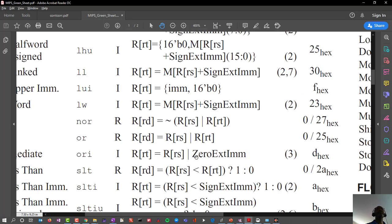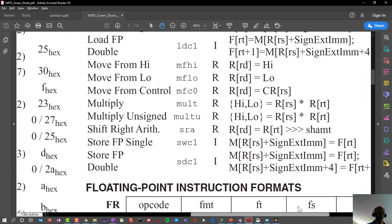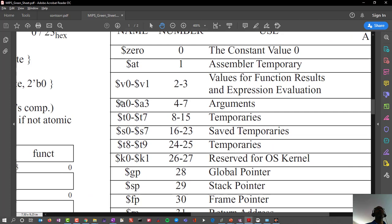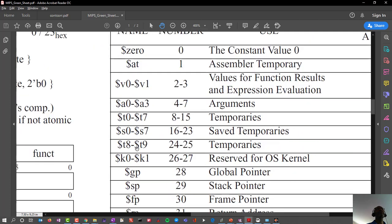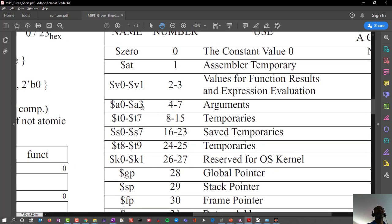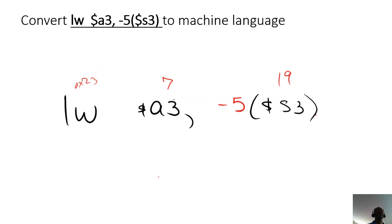If you go back to the green sheet, A3, so let's see, each one of these registers, of those 32 registers, each one has an associated number. A0 is a 4, A1 is a 5, A2 is a 6, and A3 is a 7. So this shows the starting and the ending, so A3 is the number 7, hence a 7 here.